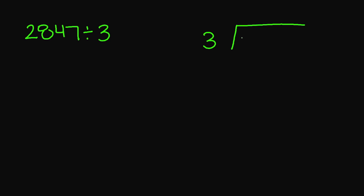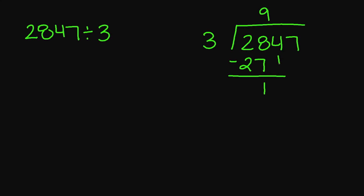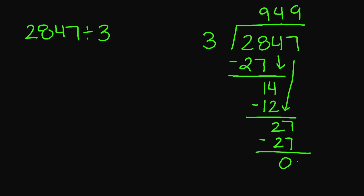Let's try 2,847 divided by 3. Let's set up our division problem. 3 goes into 2 — it doesn't go, it's too small. 3 goes into 28 nine times. 3 times 9 is 27. 28 minus 27 is 1. I'm going to bring down my 4. 3 goes into 14 four times. 3 times 4 is 12. 14 minus 12 is 2. I'm going to bring down this 7. 3 goes into 27 nine times. 3 times 9 is 27. 27 minus 27 is 0. So my quotient is 949.